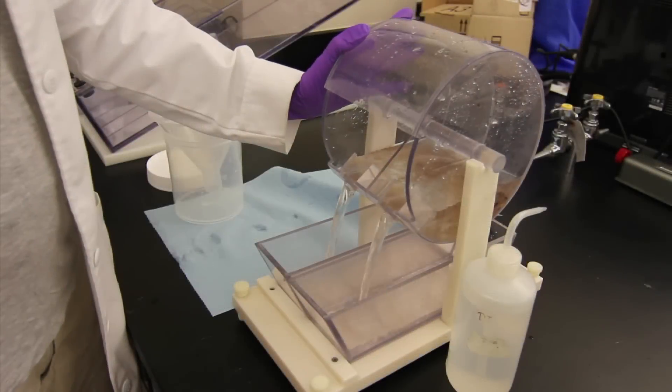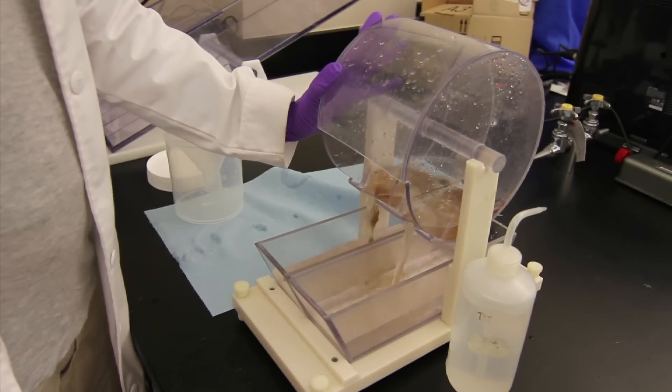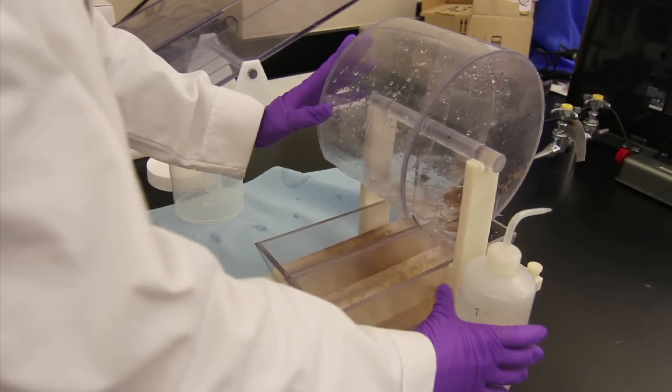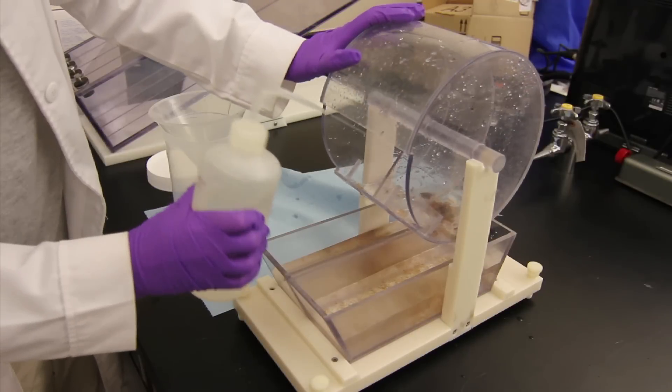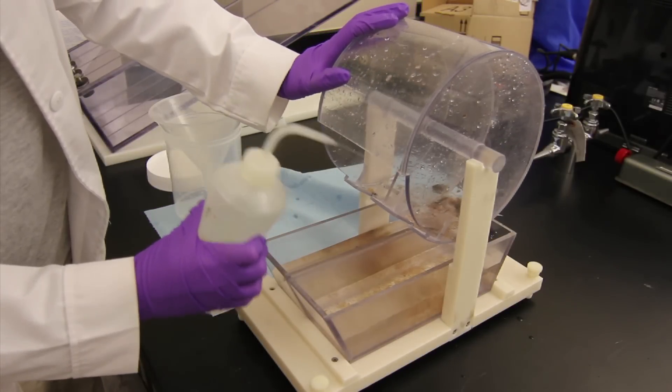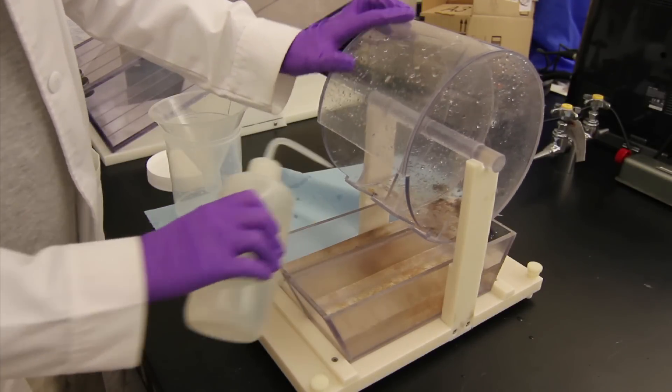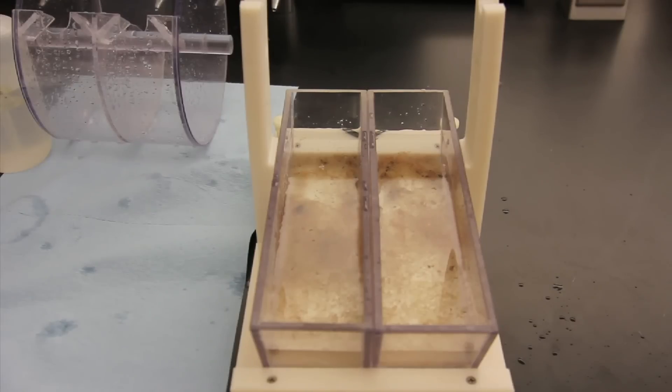To decant the sample fractions into the collection trays, use a spray bottle to remove all organisms. At this point, you have split your sample into two approximately equal aliquots.